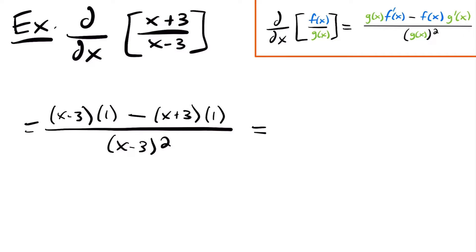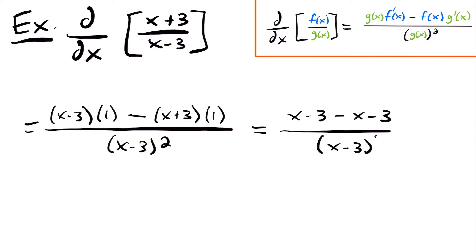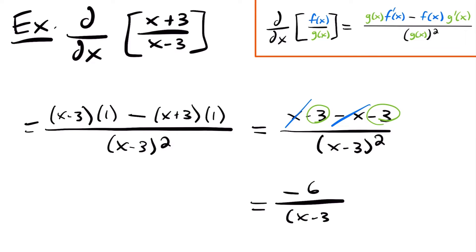So we'll have x minus 3 squared. So now we can simplify. We are going to have x minus 3 minus this quantity x plus 3. I'm going to distribute this negative through each part, so we'll have minus x minus 3. This will all be over x minus 3 squared. We have this positive x and this negative x that cancel out, and then we can add our negative 3 and our other negative 3. So this will be equal to negative 6 divided by x minus 3 squared, and that would be the answer to our derivative of this function.